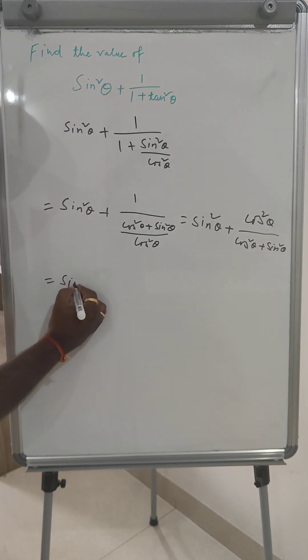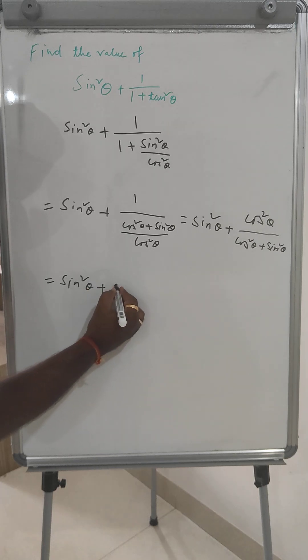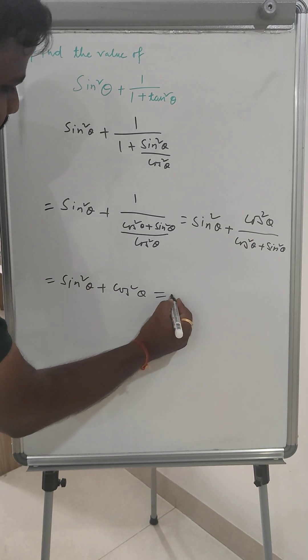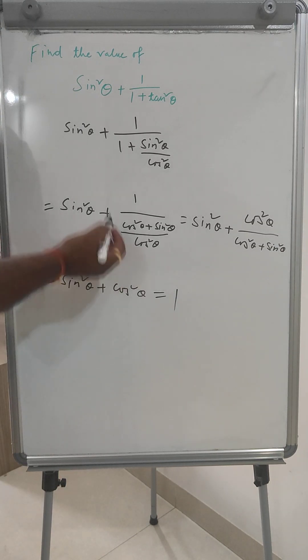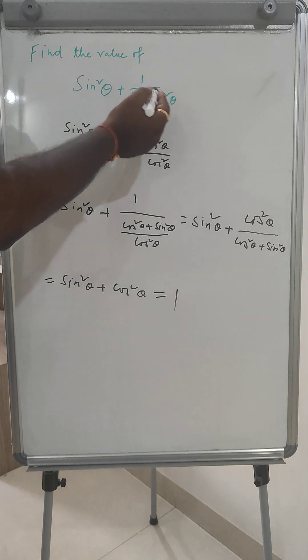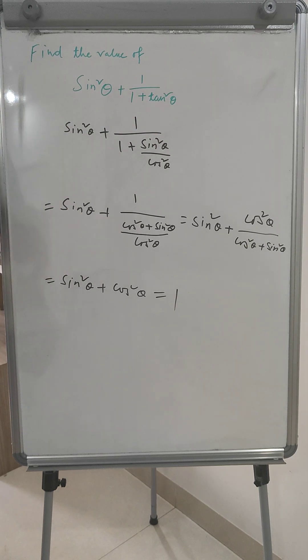Hence this is sin²θ + cos²θ. The original problem sin²θ + 1/(1 + sin²θ) is basically an MCQ question, okay?